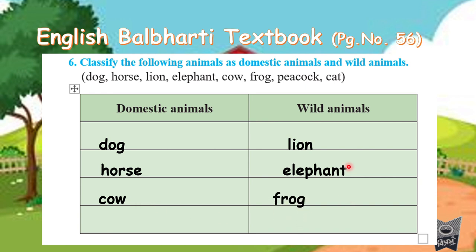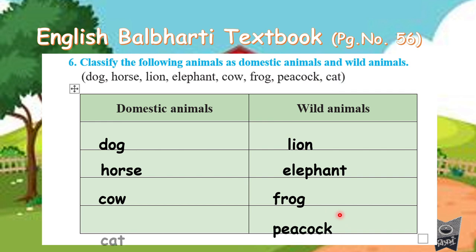So frog is a wild animal. Peacock — do we keep it at home? No, it is found in the jungle, so peacock is also a wild animal. And the last one is cat — can we keep it at home? Yes, so it is a domestic animal. Complete your classwork in your English textbook only. Write dictation words at least two times in your English notebook.